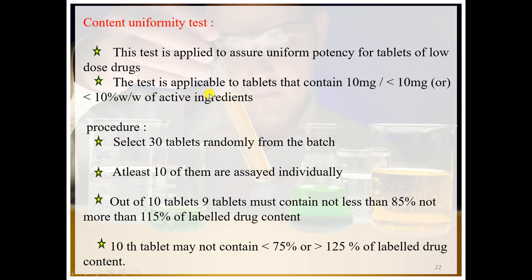First of all, you will have to select 30 tablets randomly from the batch. Then, at least 10 of them are assayed individually — that is, 10 tablets out of the 30 are assayed individually.